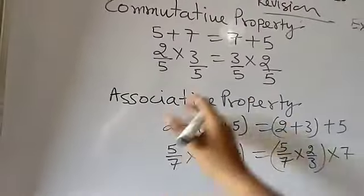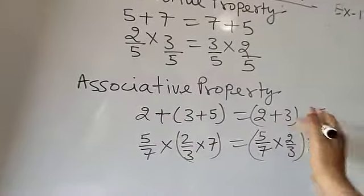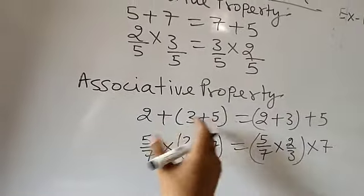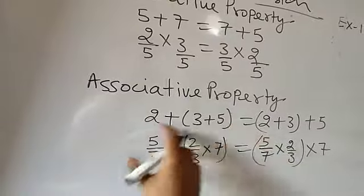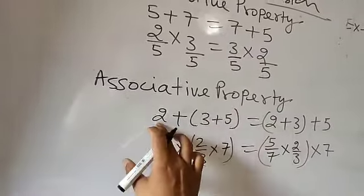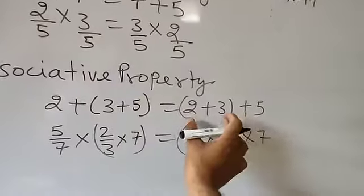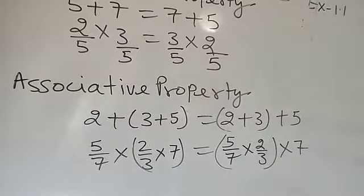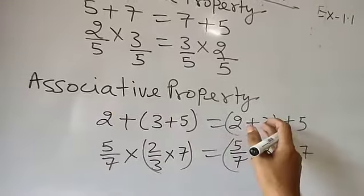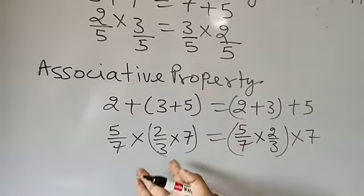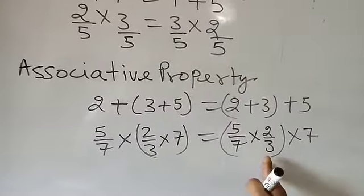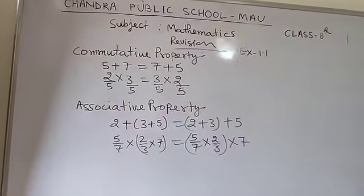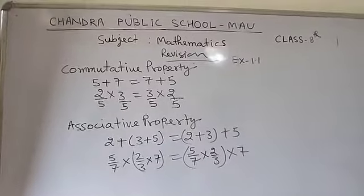Now in the associative property, you take three numbers. Here I have written 2 plus 3 plus 5, and 2 plus 3 plus 5 — both are same, only I had changed the position of the bracket. First I am going to add these two and after that add 2; and here I will add these two and after that add 5. But the answer is not going to be affected, so that is why associative property is followed. In the same way, in multiplication also, associative property is followed. These are the properties used in rational numbers.